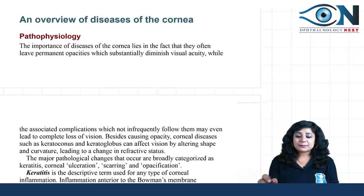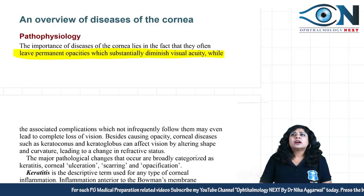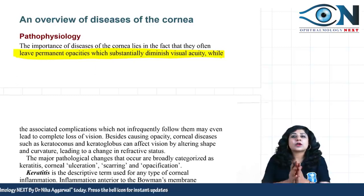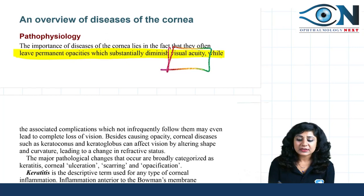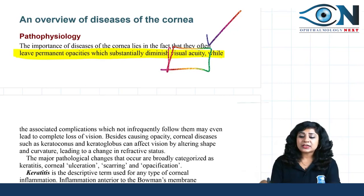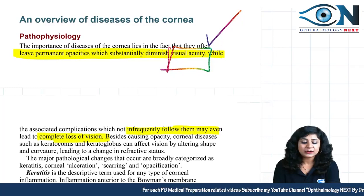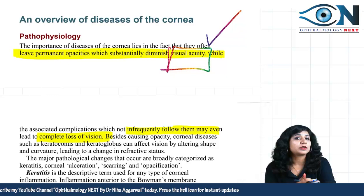The importance of diseases of the cornea lies in the fact that they often leave permanent opacities and obviously diminish visual acuity. We are basically concerned about opacities in the cornea because the cornea is transparent — it is the most important refractive surface — and obviously if there is opacity, there will be diminution of vision.